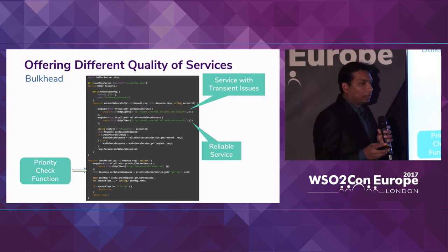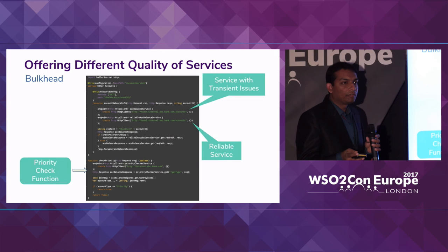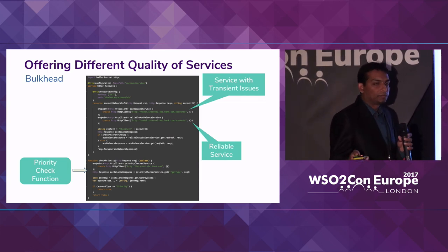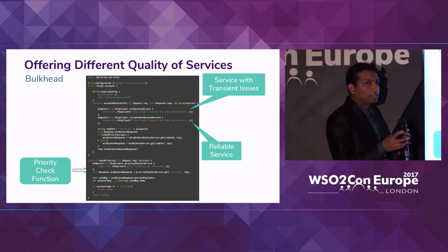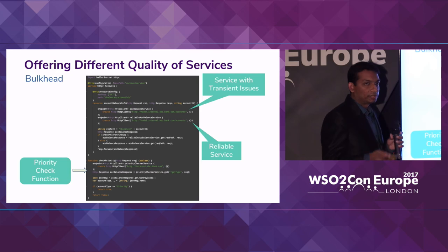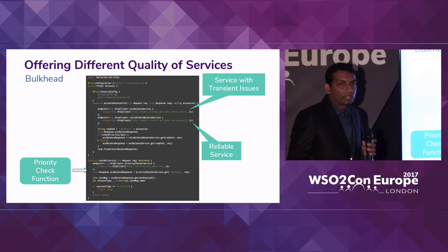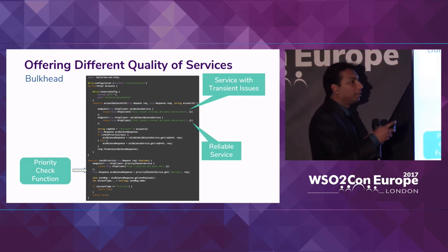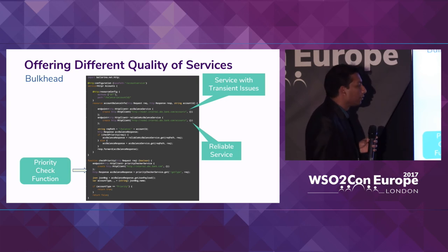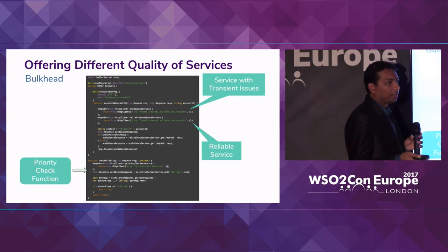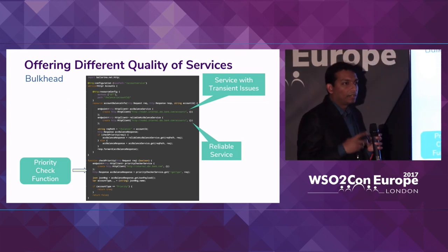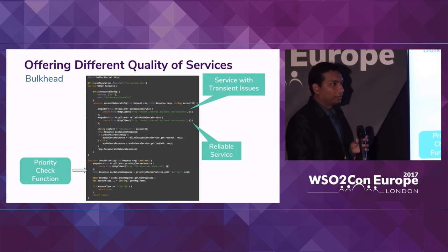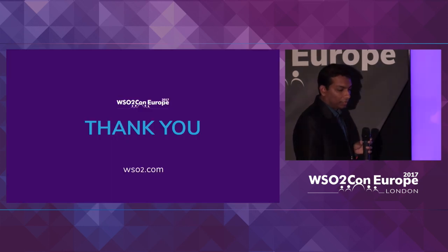All these resiliency configurations are at the endpoint level. There are two ways to configure them: using option structs, or using decorator connectors. If you want to introduce a new resiliency pattern, it's just a matter of writing a new decorator connector and wrapping a base connector with it. In that way we can implement more and more resiliency patterns with Ballerina, and all these decorator connectors are written using the Ballerina programming language itself. That's all I planned to cover in this session.